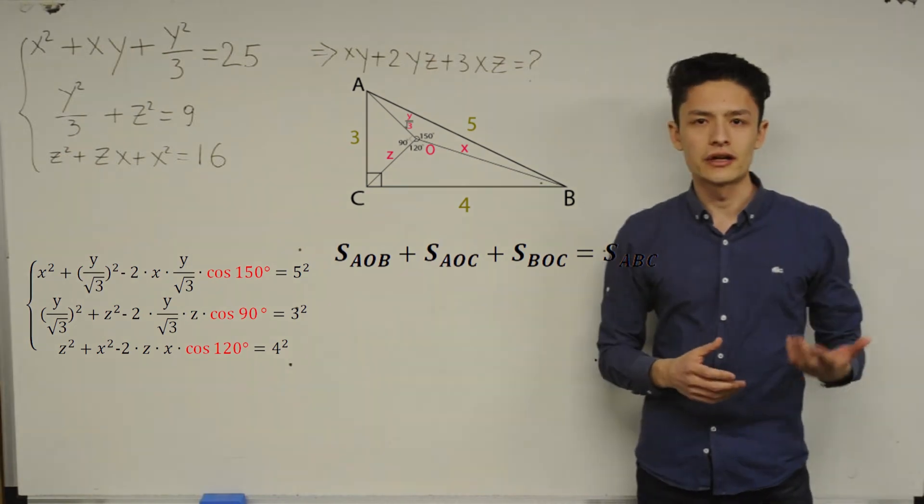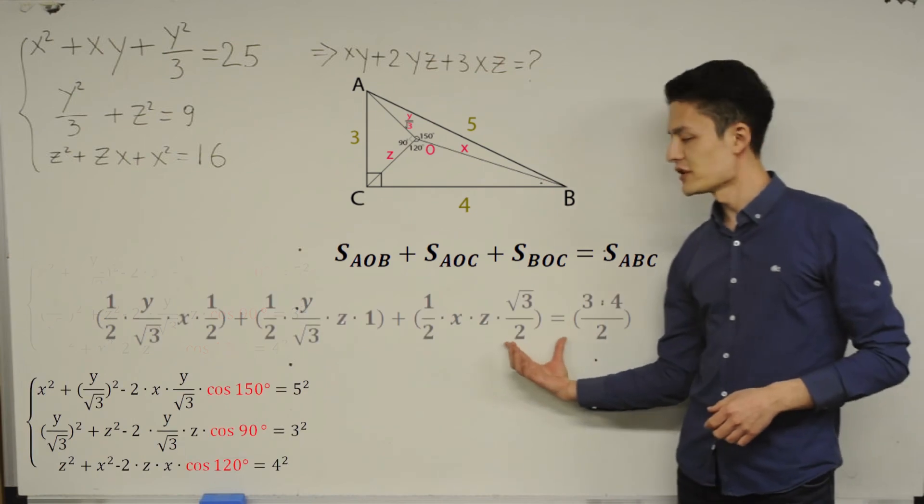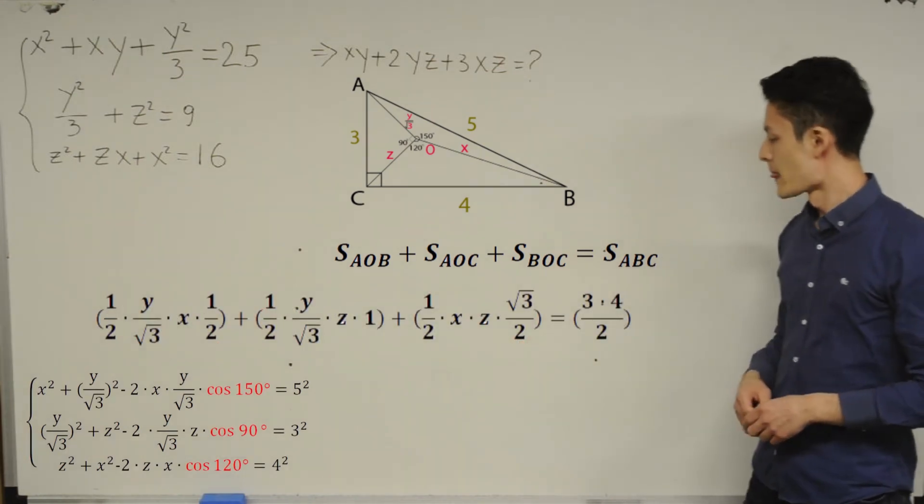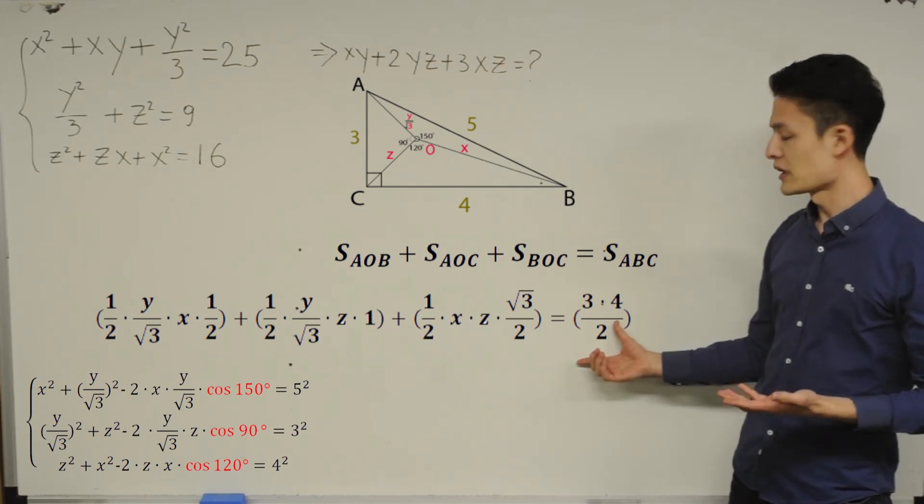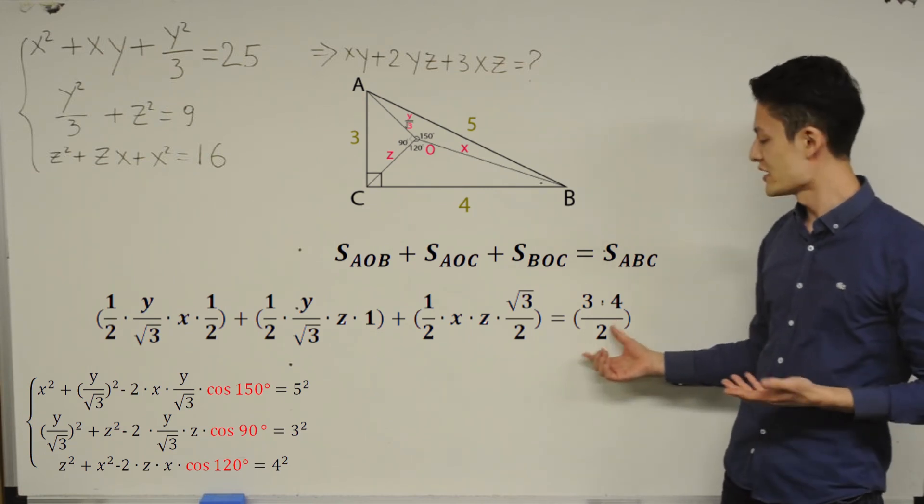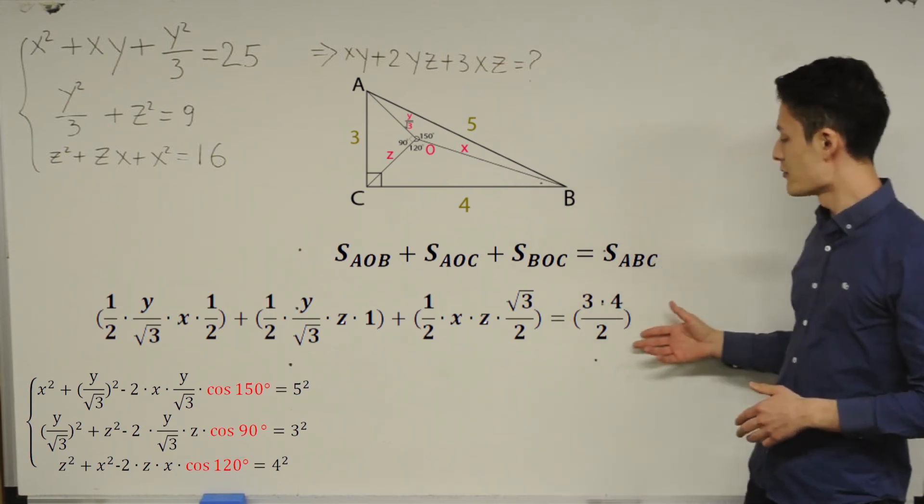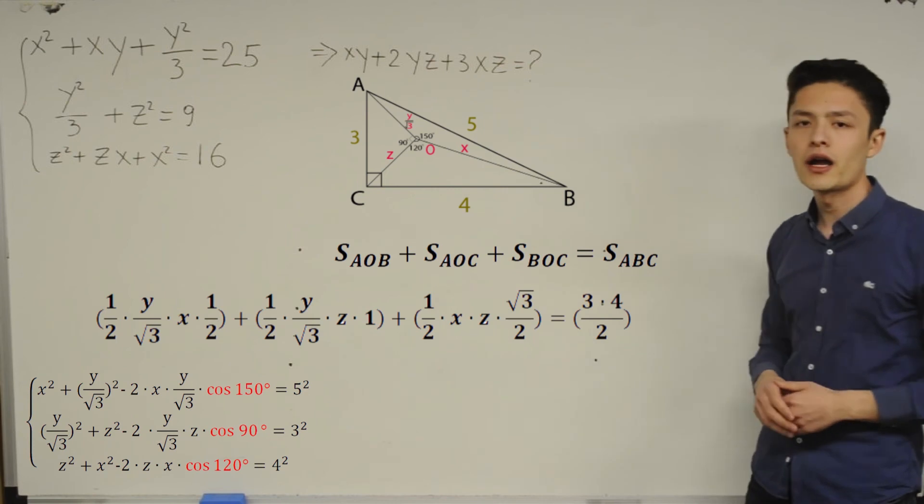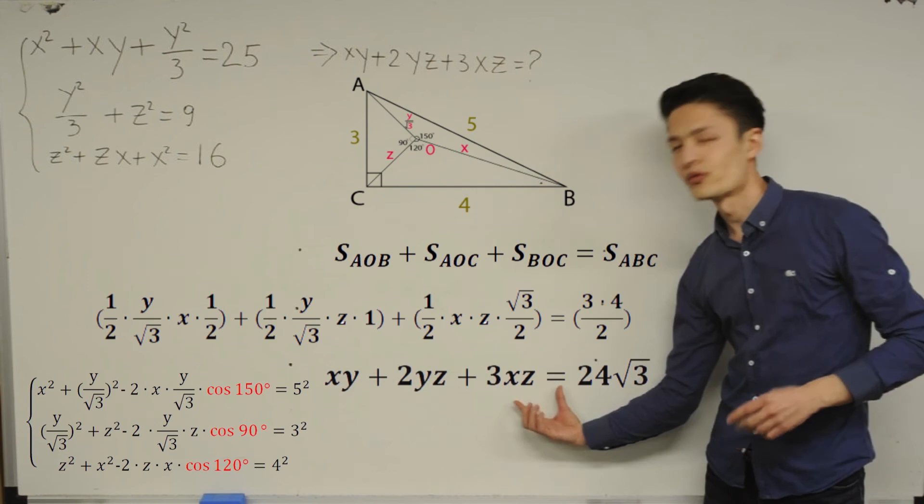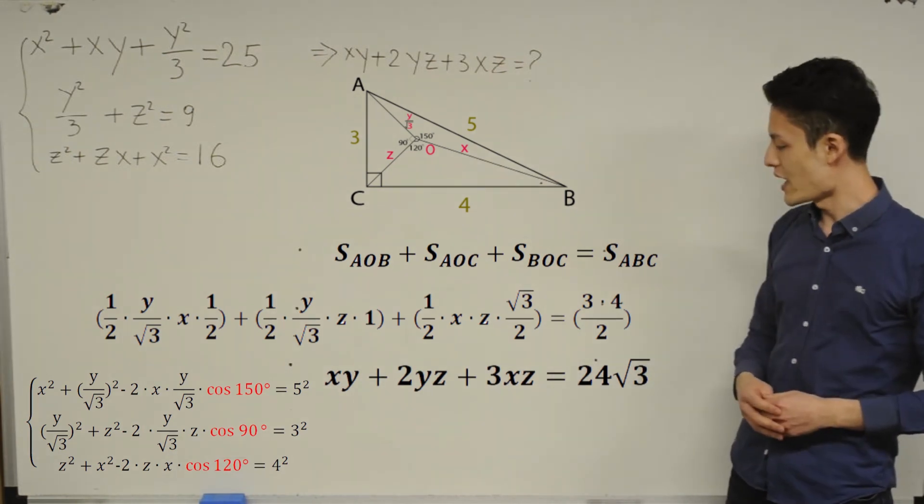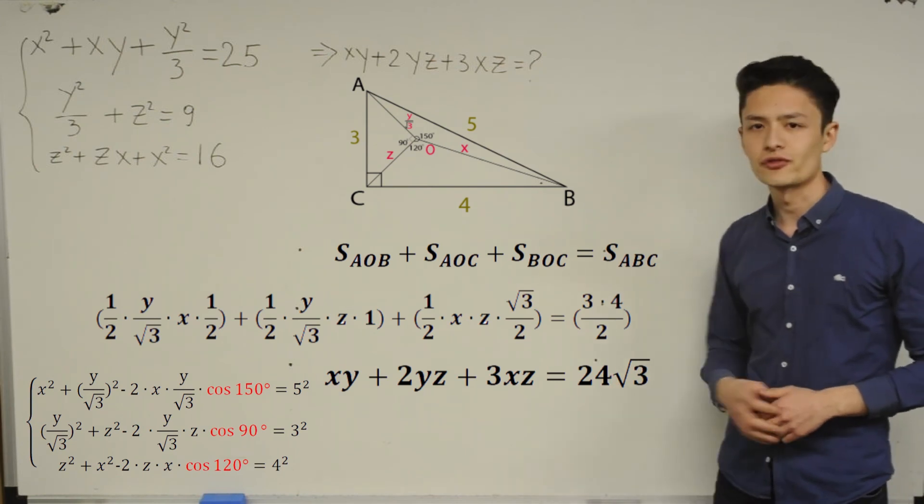And now, based on the triangle area formula, we can have this equation, the next line. And now, I'm going to multiply. And lastly, the biggest area is triangle ACB. And its area is equal to 3 times 4 divided by 2. And I'm going to multiply this whole equation by 4 times root 3. And at the end, I'm going to have this equation, which is xy plus 2yz plus 3xz is equal to 24 times root 3.